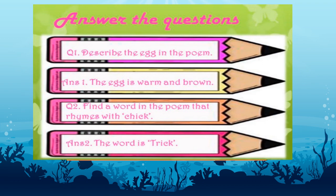Answer the questions. Question 1 is: describe the egg in the poem. Children, how has the egg been described in the poem? The egg is warm and brown. Peck peck peck peck on the warm brown egg. So the egg is warm and brown.